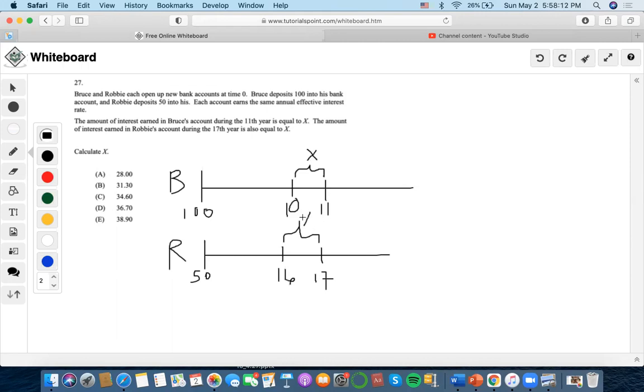We've learned that the amount of interest earned is always equal to the later time, for example 11, minus the previous time, for example 10. So it's always time t minus time t minus one. What has accumulated at the later time minus what has accumulated at the earlier time.